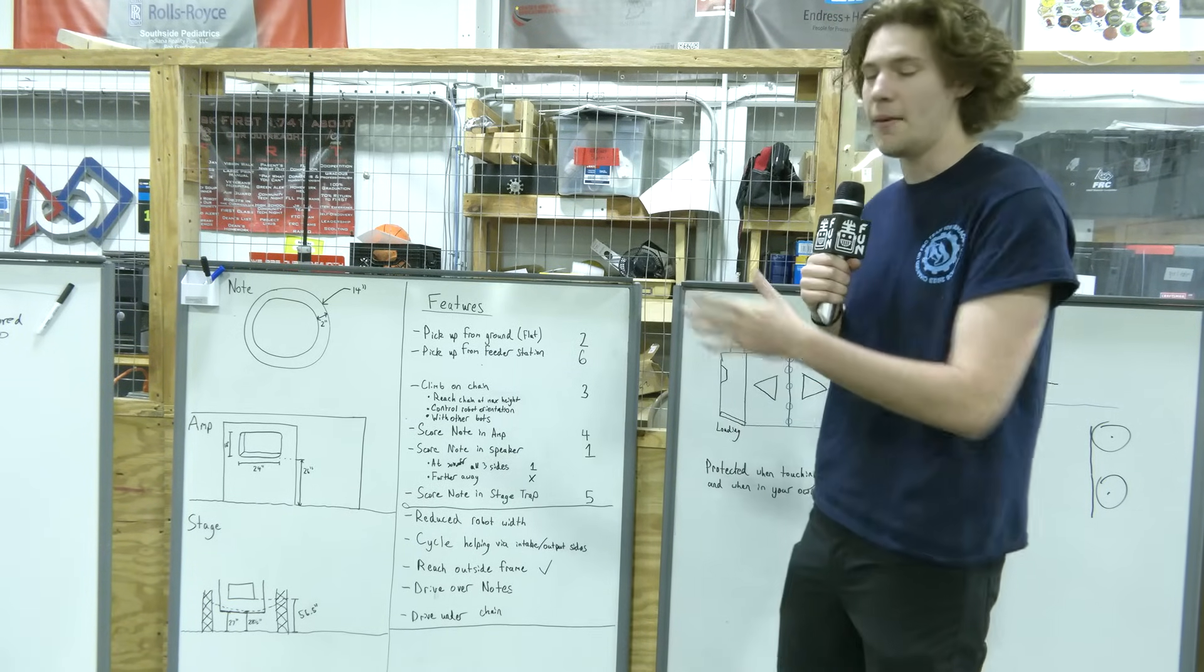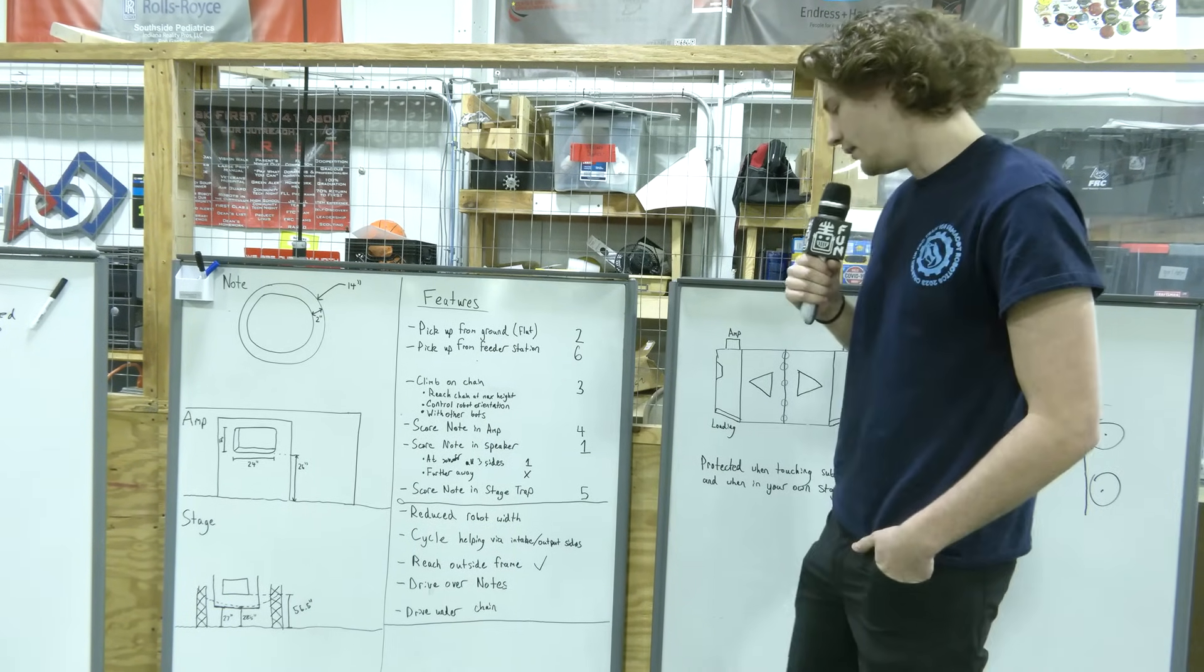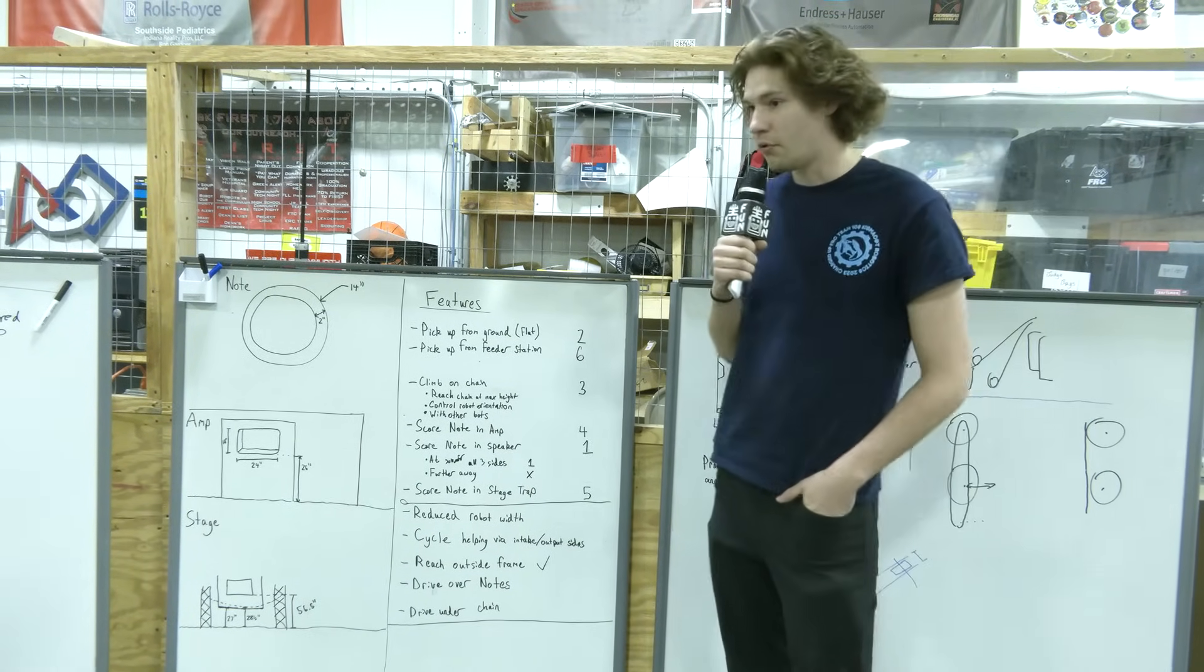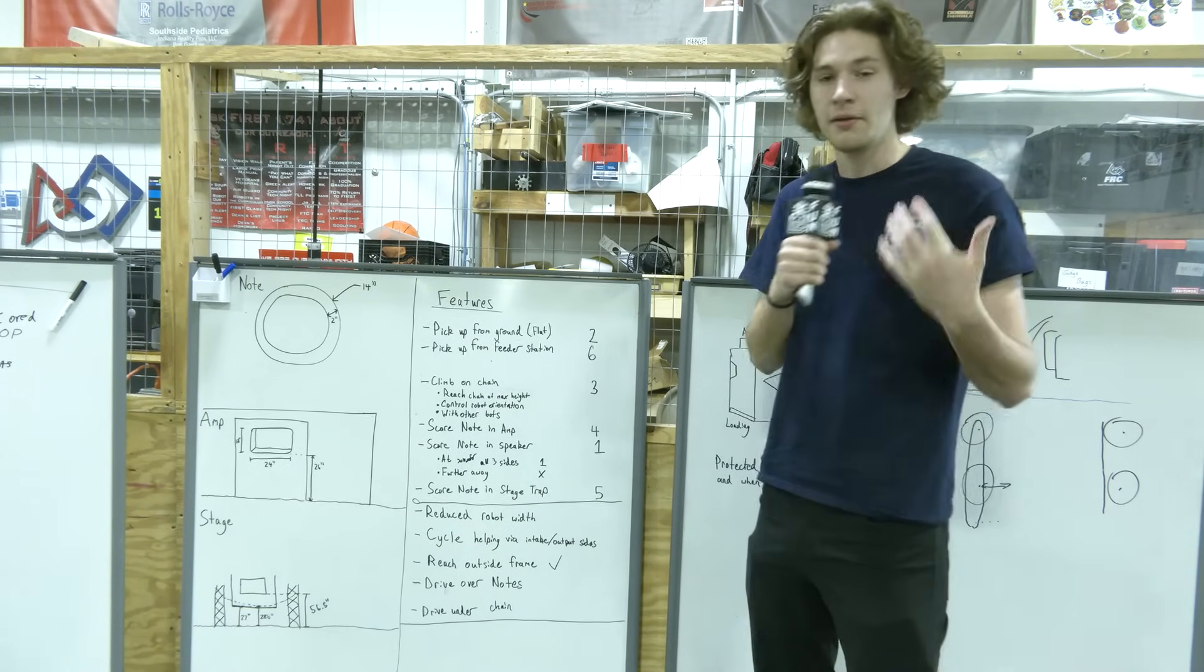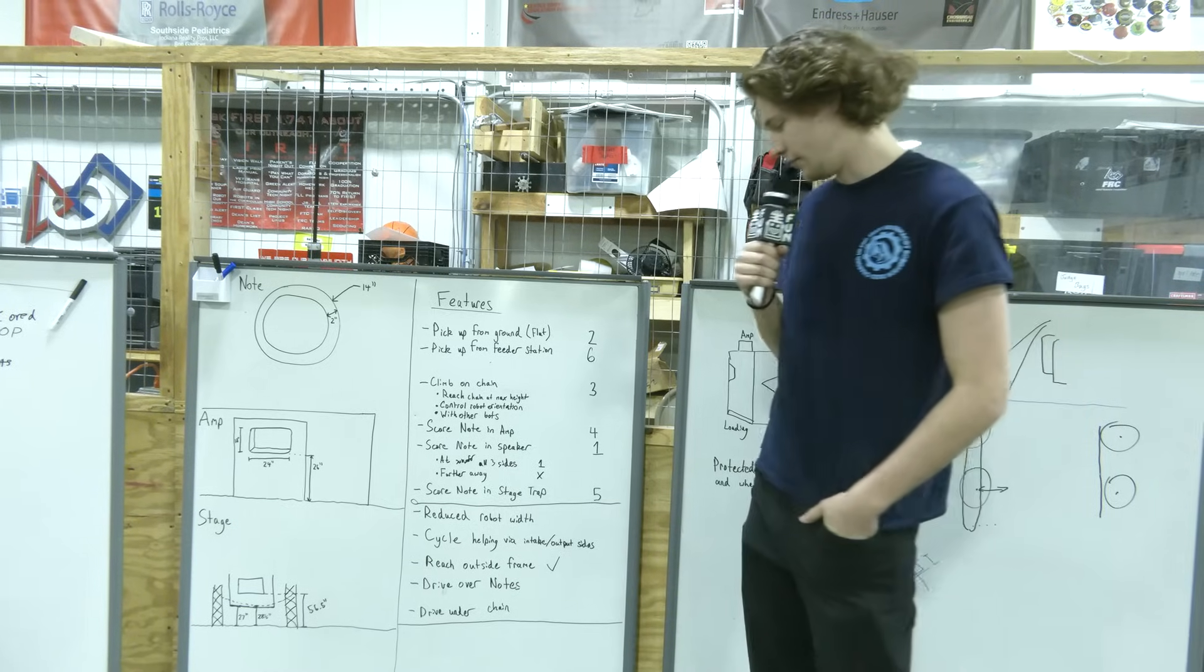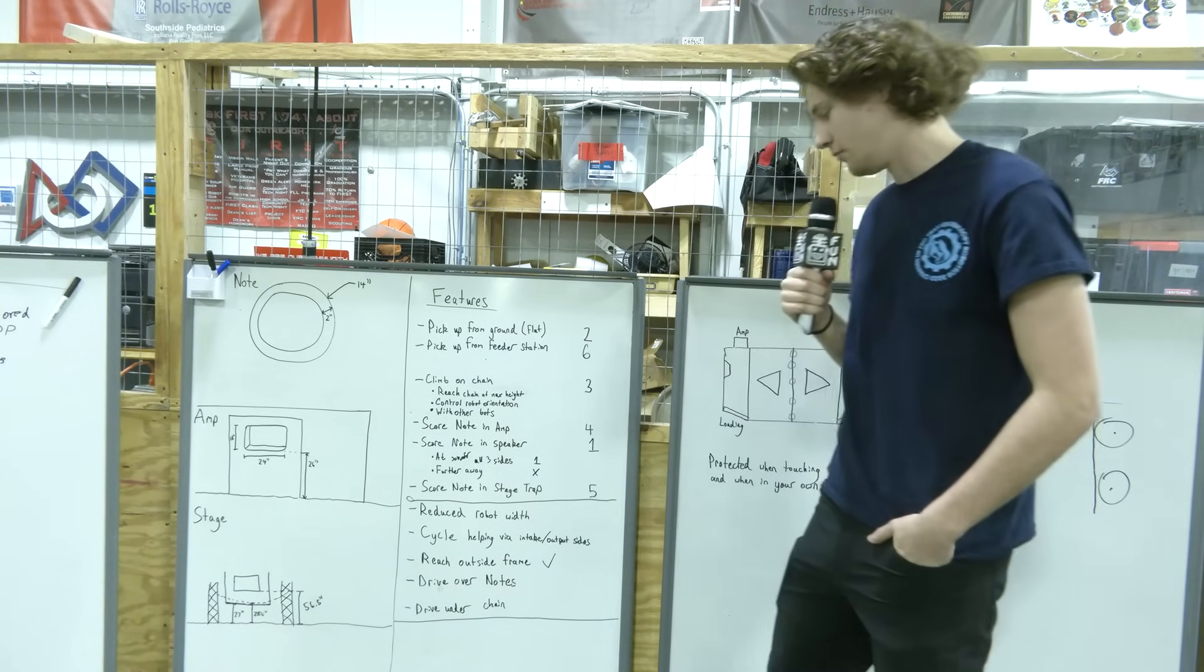And then reaching outside the frame perimeter is going to be really important for grabbing game pieces that may be tied up against the wall. That way, if you had to cut out on your frame perimeter, it might be hard to go grab that. Driving over nodes is going to be really important. If you grab on the other side of the field, you grab a note and you come all the way to the other side, you're probably going to be hitting maybe a few notes on your way there. So it's going to be really important to be able to drive over those really easily.